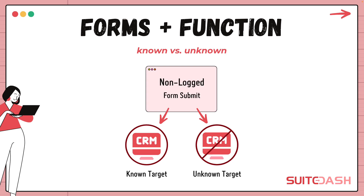The next concept you should understand is known versus unknown. You have a target audience out on the internet and the people who are part of that audience we call targets. When a target shows up for the first time, they are not logged into your portal — they're likely looking at something like a kickoff form. They're not in your portal because you've never seen them before. When they submit the form, the platform looks to see by email address if that target is in your CRM or not. If we've never seen them before, they're not in your CRM and they're what we call an unknown target.